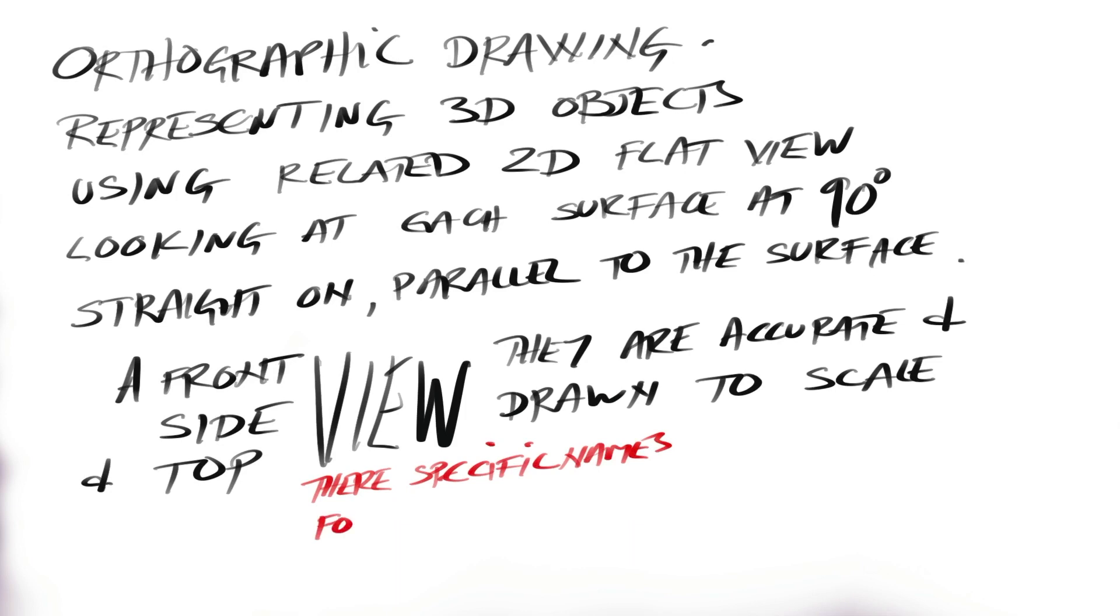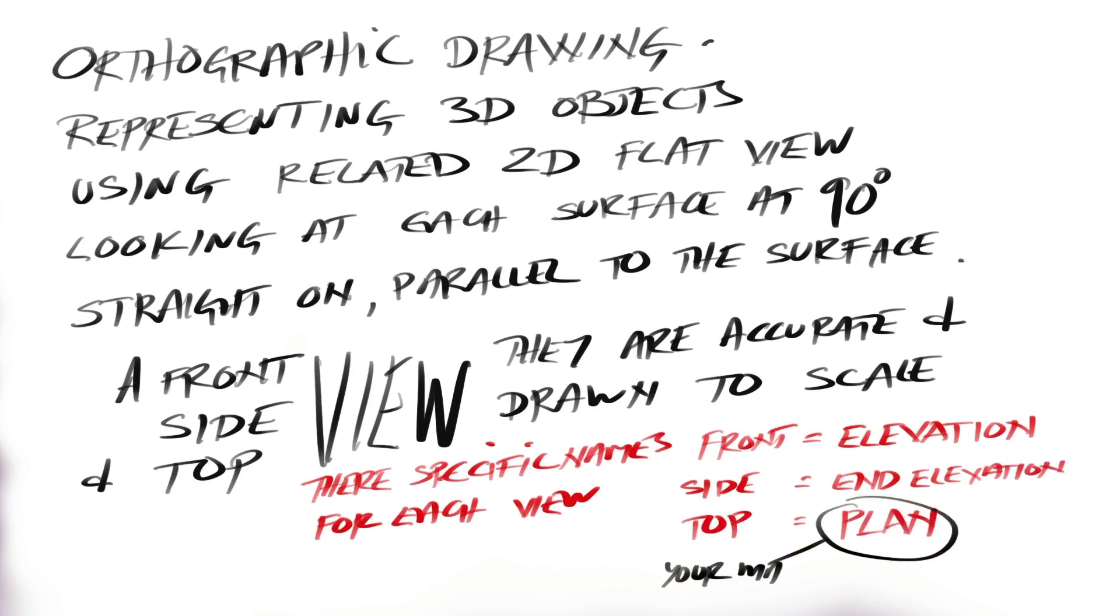The specific names for each of these views will change. The front view we're going to refer to as the elevation. The side view we'll call the end elevation, and the view from above, the top view, we're going to refer to as a plan.